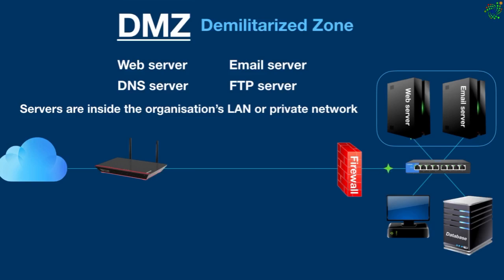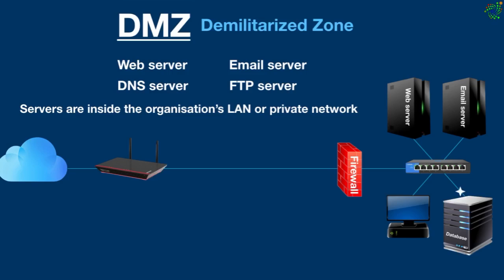This means that the organization is letting in everyone from an untrusted network like the public internet and giving them access behind the organization's firewall and into the local area network or private network where the servers are located. If this happens, it would create a security issue because as people are accessing these servers, cyber criminals can also take it as an easy way to get into the private network and cause damage, since they have already passed through the firewall. Cyber criminals can steal sensitive information from other devices behind the firewall, like a database server where secret data is kept. They can even install a malicious virus on other devices. So this is a major security concern.